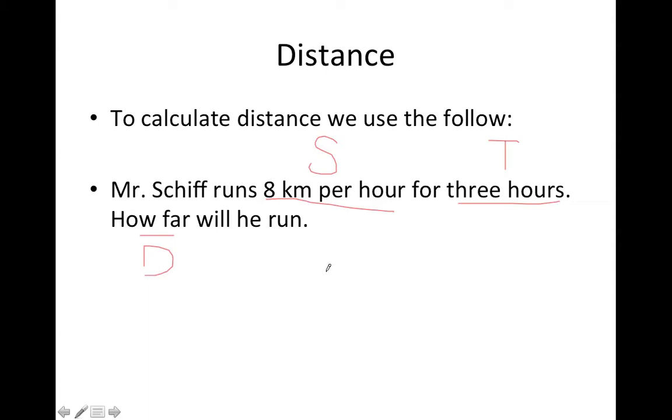So, you could probably pretty logically say, if I'm running an average of 8 kilometers per hour for 3 hours, I'm running a total of 24. And again, you can think about it very logically. 8 kilometers after the first hour, 16 after the second, 24 after the third.